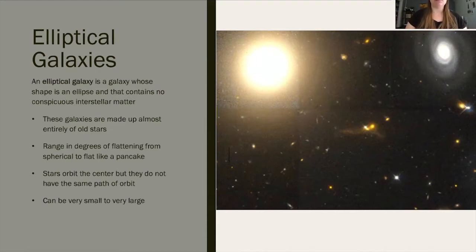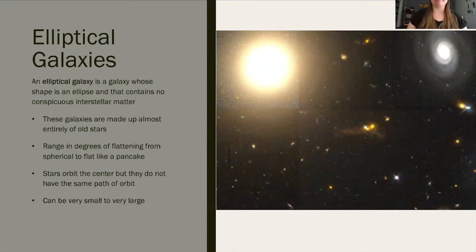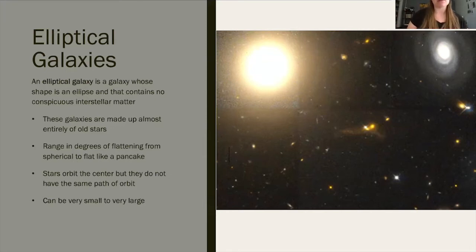Elliptical galaxies are just as common as spiral galaxies. There is an idea that eventually all the spirals will end up as elliptical galaxies or irregular galaxies. Eventually those will die away because they're not creating new stars — these are all made up of older stars.